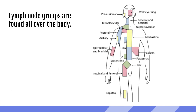We have about 600 lymph nodes all throughout our body. Some exist as a single node, but others are closely connected in groups called chains. These groups or chains are typically referred to by their anatomical location. Today we're going to focus on the cervical and occipital lymph nodes.